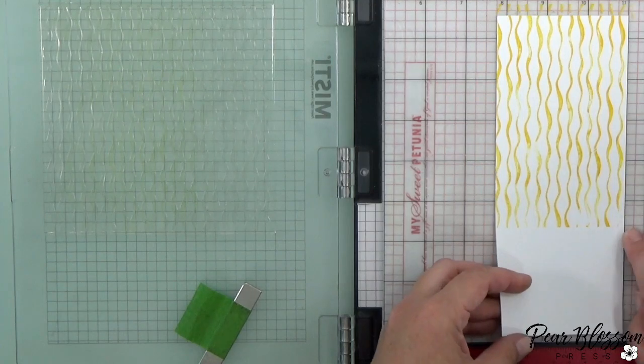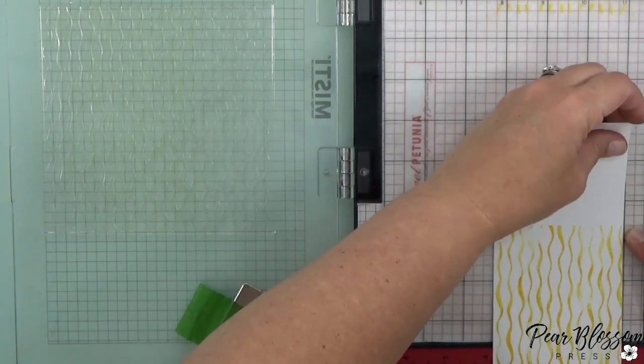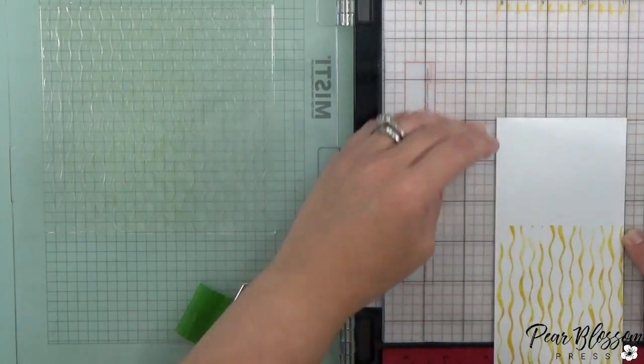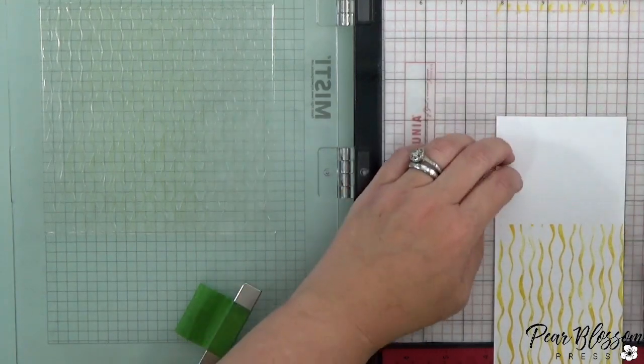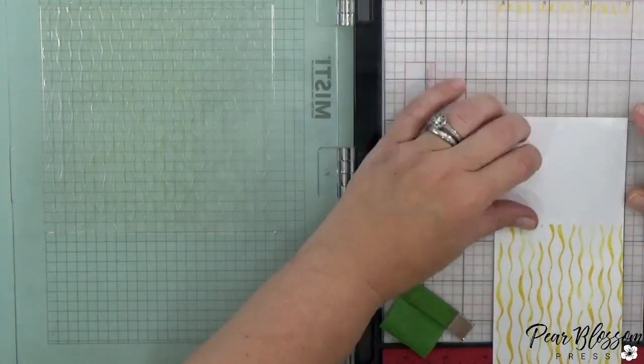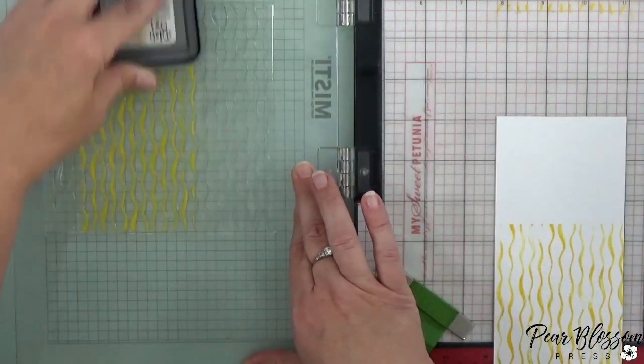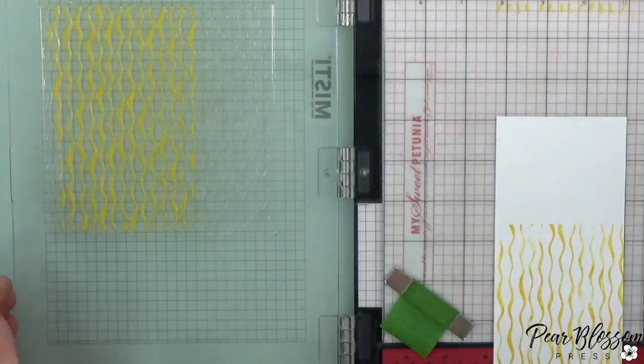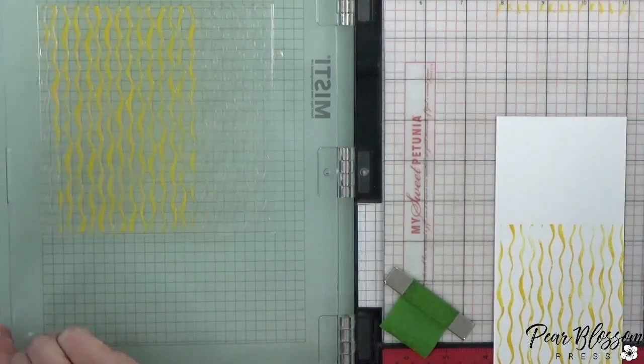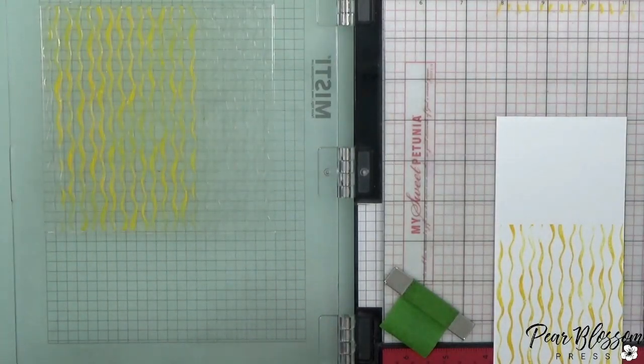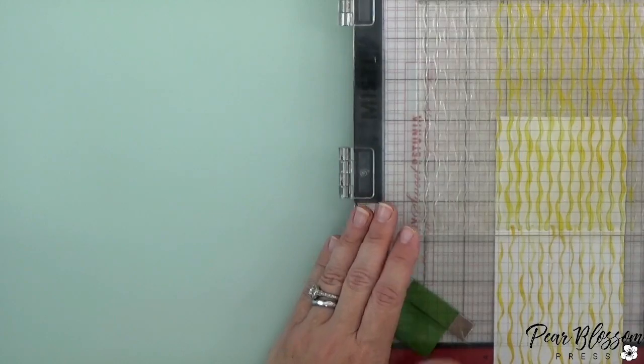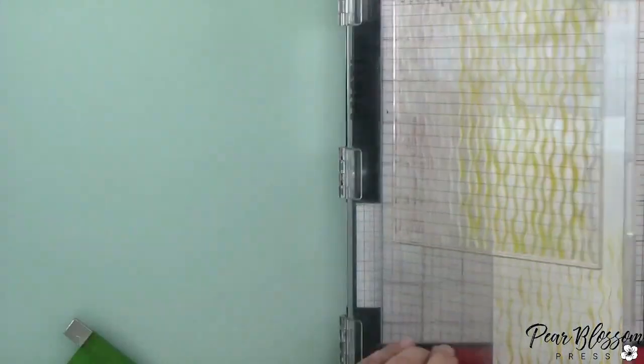And then I can go ahead and lift this panel up, flip it around, and just line it up. I did clean that stamp in between here too. And then I'll just ink it up one more time and I'm going to mist it again, pick up some of that ink.